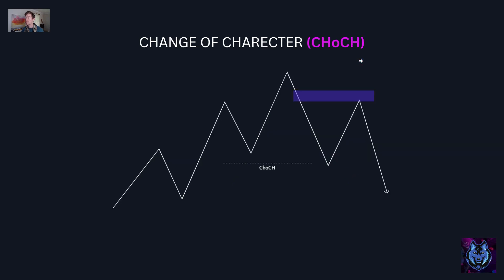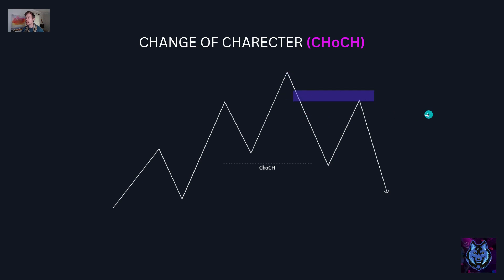Here is a change of character, or CHOC. A change of character is when we have a break in structure that changes the character of the trend. For instance, we've got this uptrend. This would be the break in structure over here, then another break in structure over here. But then the first break in structure to the downside that changes the deviation of the trend, we call that the CHOC. Whenever there's a change in character or break in structure, usually there's an order block and an imbalance left behind.